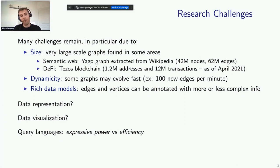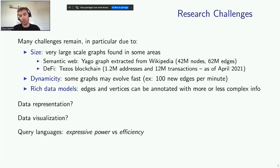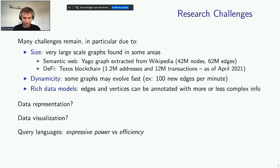Those graphs can also have a rich data model, where edges and vertices can be annotated with more or less complex information, which raises many challenges — in particular in terms of data representation. How should we represent those graphs so that querying them becomes efficient? How to visualize portions of them? And one of the most important challenges is about query languages, with the traditional trade-off between expressive power and efficiency for query answering.